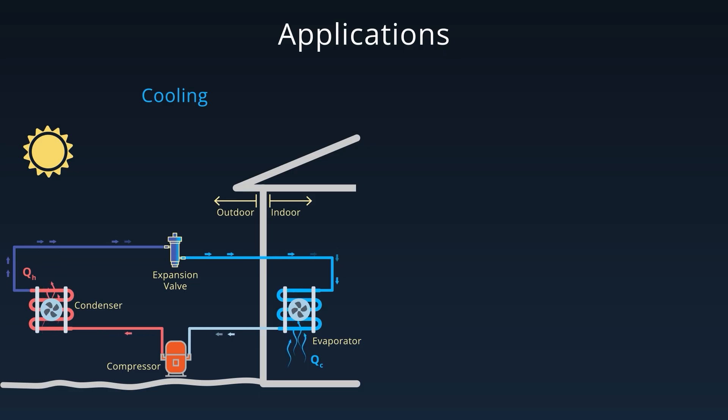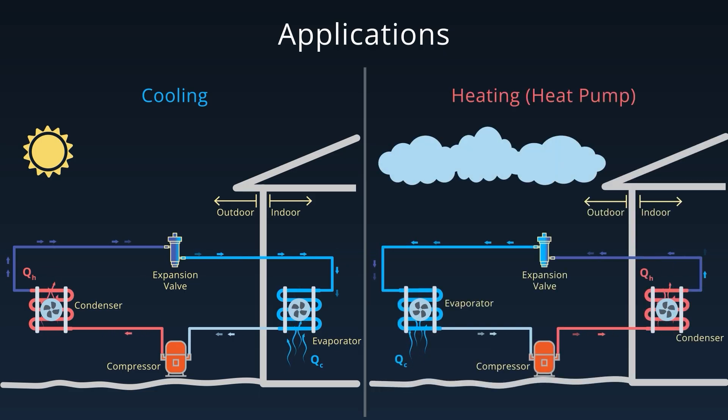Second, heating mode or heat pump. The cycle is reversed. The system absorbs heat from the outdoor air and releases it indoors, even when the outside temperature is low. Both functions rely on the exact same cycle, just run in opposite directions.